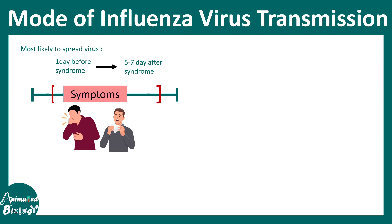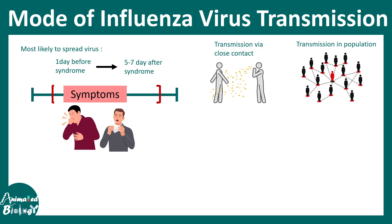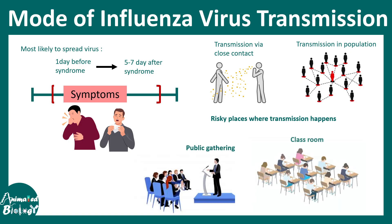A person is most likely to spread the virus one day before symptoms appear and five to seven days after symptoms disappear. During this long period, they are capable of shedding or transmitting the virus to the next individual via coughing or sneezing. Transmission often happens via close contact and can spread rapidly in populations in places like public gatherings, classrooms, or crowded buses.